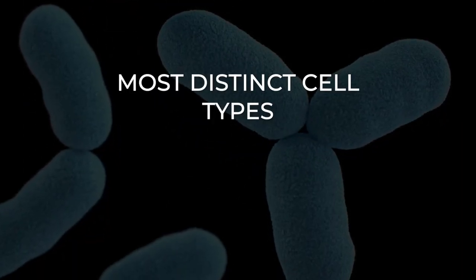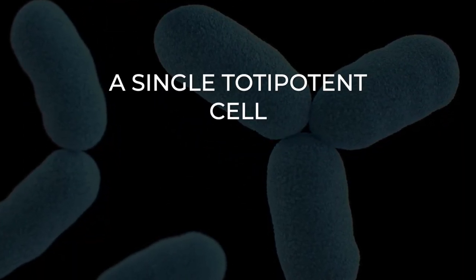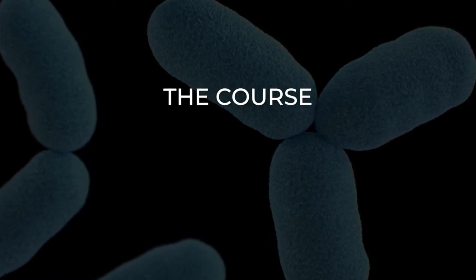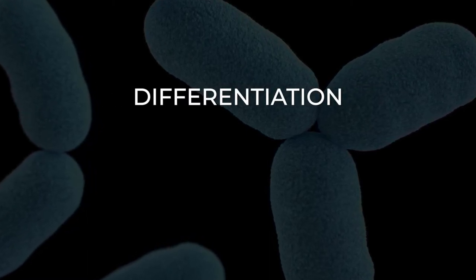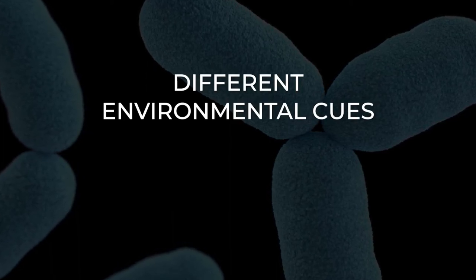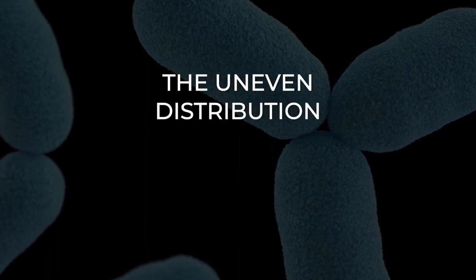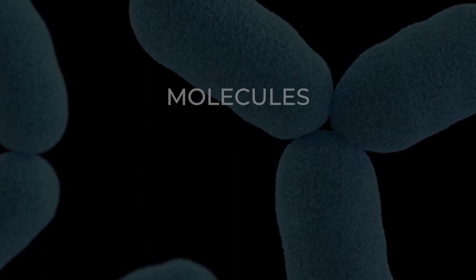Most distinct cell types arise from a single totipotent cell, called a zygote, that differentiates into hundreds of different cell types during the course of development. Differentiation of cells is driven by different environmental cues, such as cell-cell interaction, and intrinsic differences, such as those caused by the uneven distribution of molecules during division.